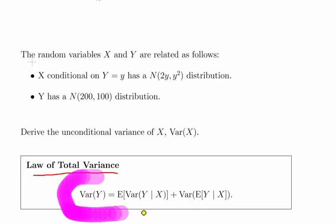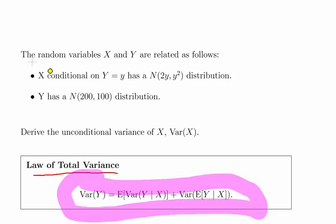We're going to look at two random variables X and Y that are related as follows: X conditional on Y equals y has a mean of 2y and variance of y squared. The values and parameters of X are conditional on the values of Y. Y has a normal distribution with mean 200 and variance 100.